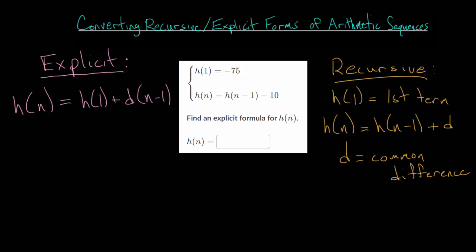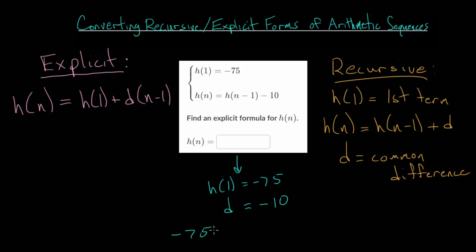Going back to our example problem, we're told what the first term is and then we're told the pattern, since we have a recursive formula. Comparing it to our formula, the number we add or subtract from the n minus 1 term is the common difference. To find the nth term, you take the term before it and add or subtract that common difference. In our case, the first term is minus 75, and our common difference d means we're subtracting 10 to go from one term to the next. We could generate the entire sequence if we wanted — that is one way to approach these problems.